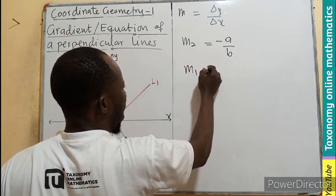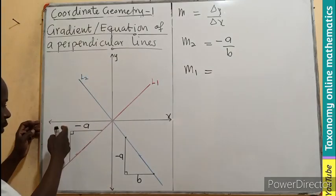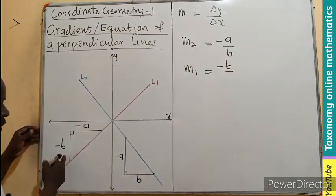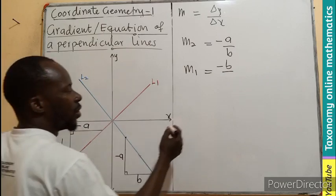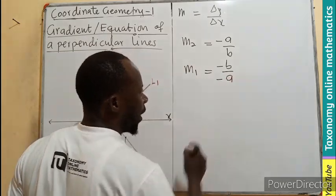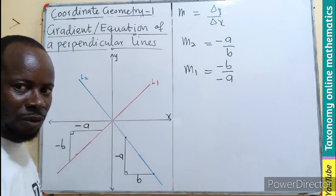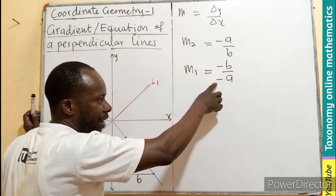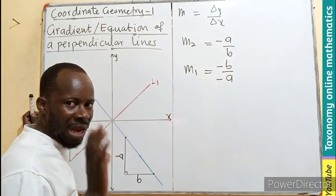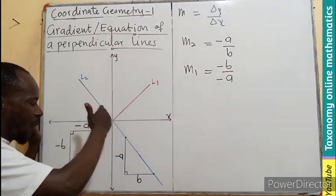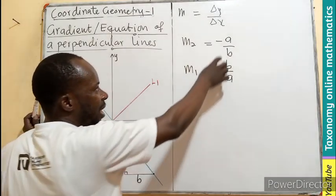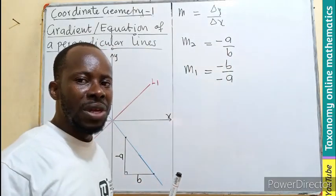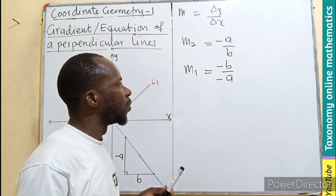So, our gradient 1 will be change on the Y axis, which will be negative B. The change on the X axis, which will be negative A. From the previous episode, we know this line will give us positive gradient. So, negative divided by negative. It will cancel. So, we got our positive. This line also will give us a negative gradient. And you can see that.